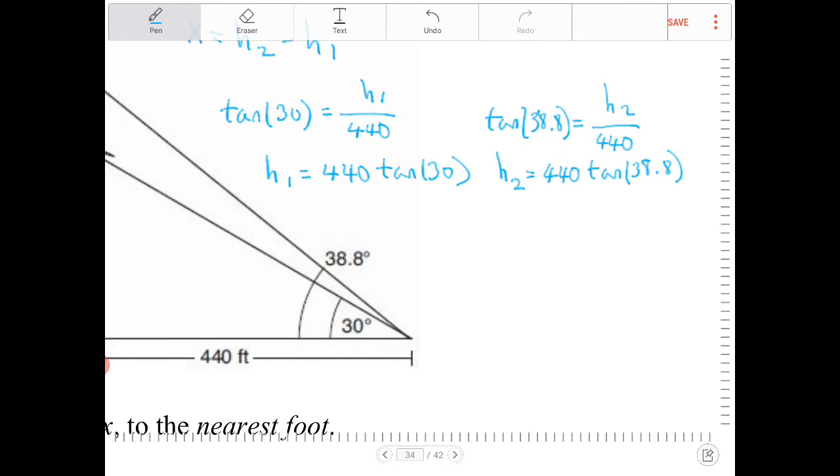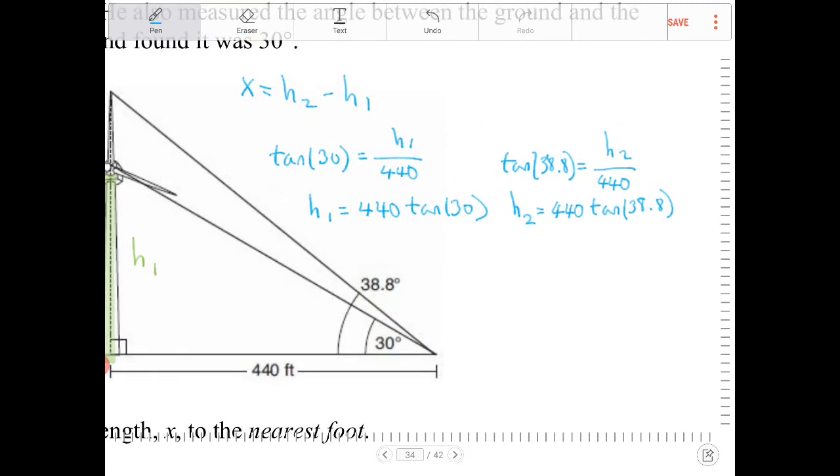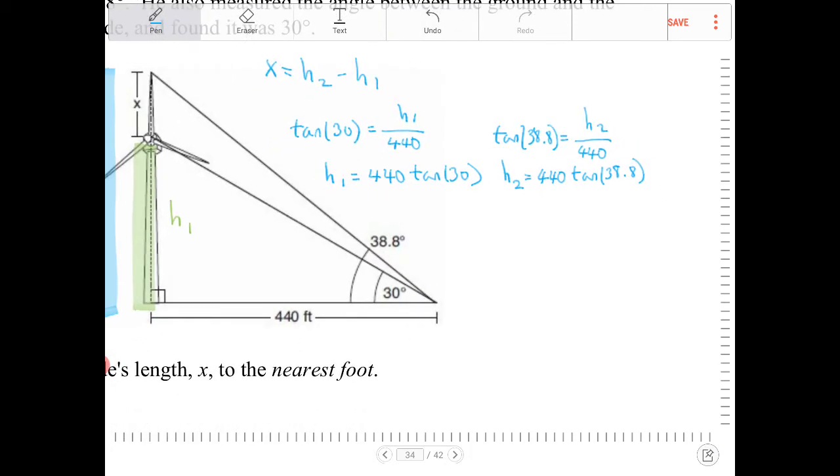Now I'll subtract these two: h2 minus h1. So x equals 440 tan 38.8 minus 440 tan 30.